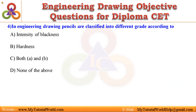Question 4: In engineering drawing, pencils are classified into different grades according to — A. Intensity of blackness, B. Hardness, C. Both A and B, D. None of the above. Answer is Both A and B.